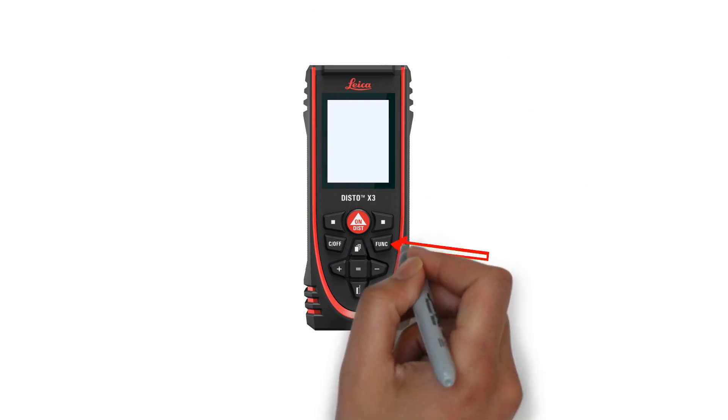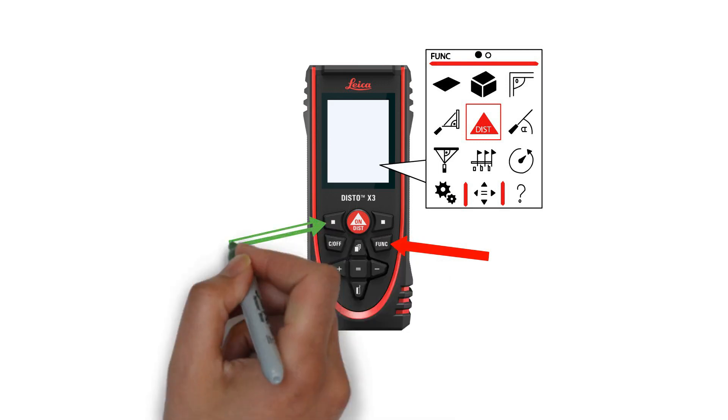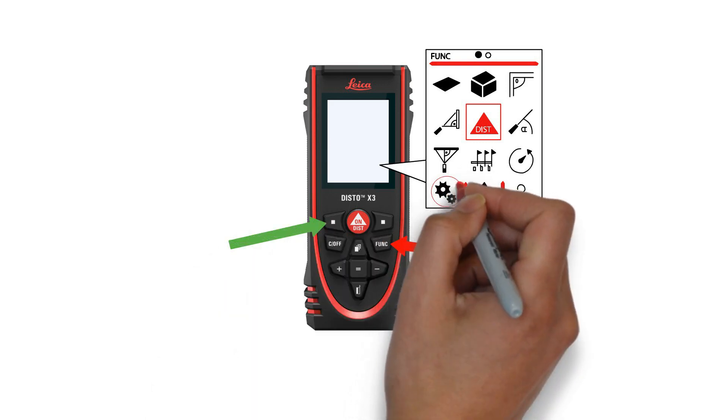Power on your device, then press the function button. This takes you into the menu. Once inside the menu, you're going to press the left selection key, which selects the gear icon.